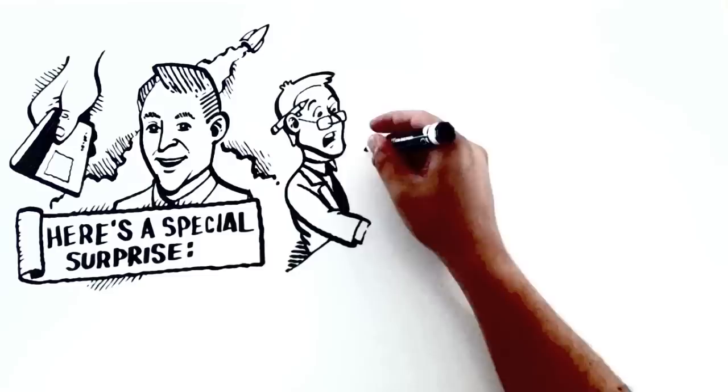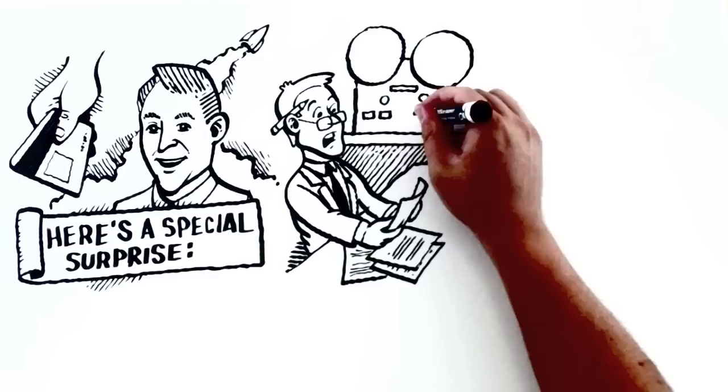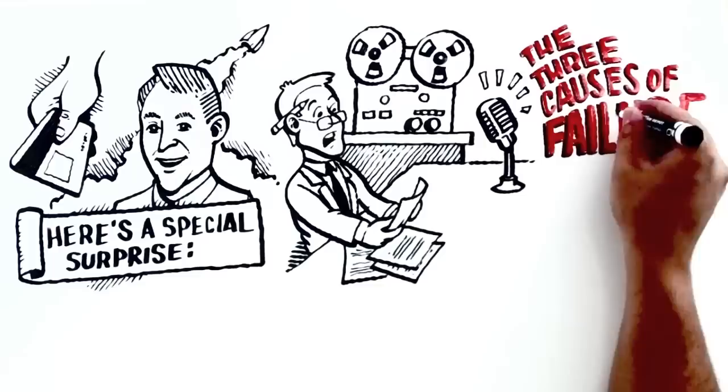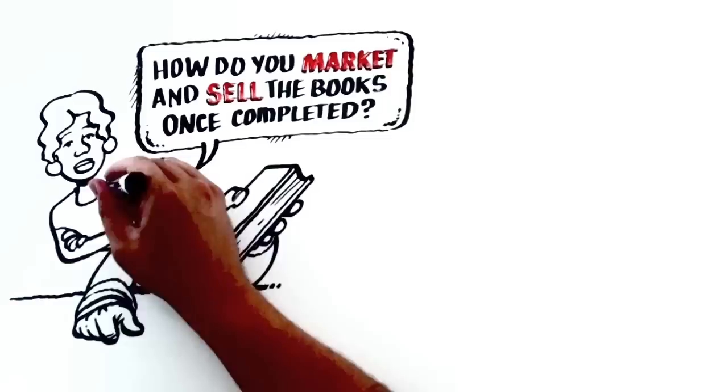Now here's a special surprise. In researching for this project, the Napoleon Hill Foundation stumbled across vintage interviews that have never seen the light of day. On an old reel-to-reel tape, Napoleon Hill in his own words shares the secret that he held close until his dying day, what he refers to as the three causes of failure. These wisdoms have never been published, never been read, and will be available for the first time in history throughout this program.